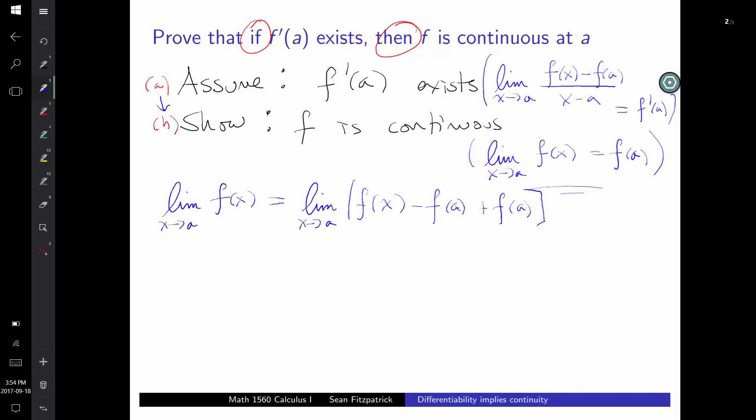What if A is not in the domain? How do I know that F of A is actually defined? Well, I know that F of A has to be defined because it shows up in the definition of the derivative. If that F of A is not defined, then there's no way for me to calculate F prime of A. So I can add and subtract a number and nothing changes. Those cancel each other out.